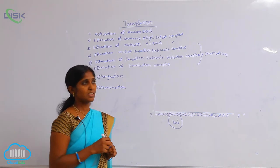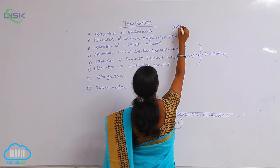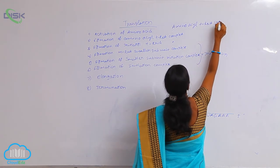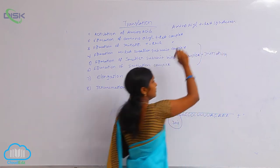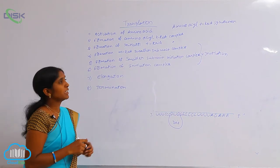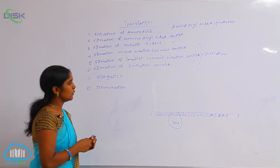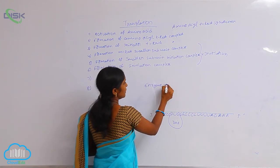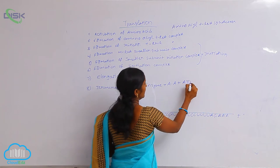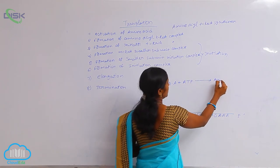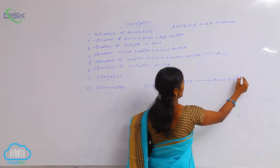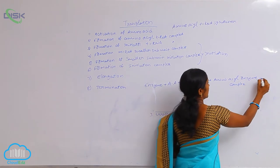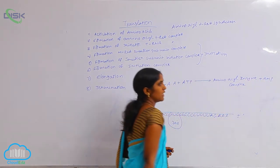One enzyme is also needed here — that is amino acyl tRNA synthetase. This enzyme mediates the reaction of amino acids. The enzyme amino acyl tRNA synthetase plus amino acid plus ATP are turned into an amino acyl enzyme complex — that is nothing but activated amino acids — and AMP is also produced.